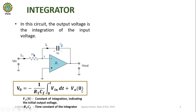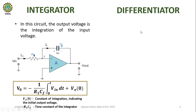Here V0 indicates the initial output voltage, and the product R1 into CF represents the time constant of the integration.